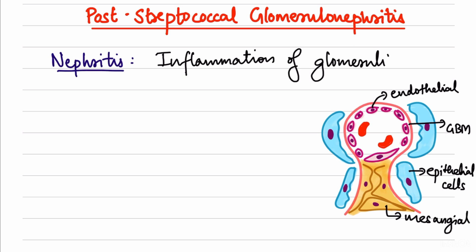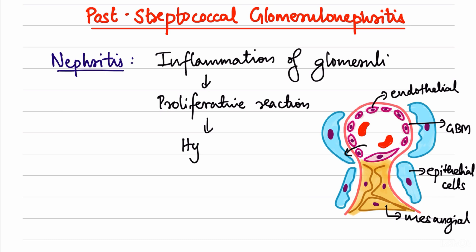From the endothelial cells, inflammatory mediators are released into the glomerulus. As a result, inflammatory leukocytes cause a proliferative reaction. This proliferative reaction produces a hypercellular glomerulus — all three parts of the glomerulus, the endothelium, basement membrane, and epithelium, will be hypercellular and start to proliferate.